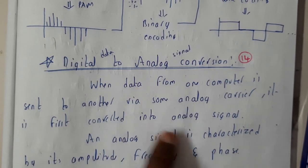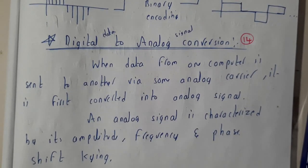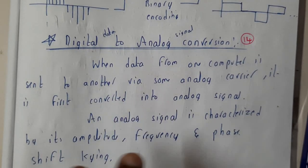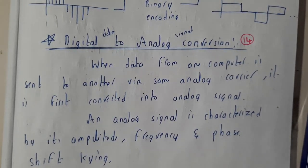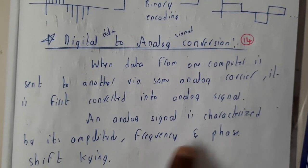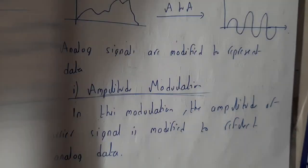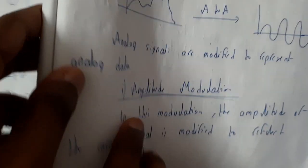Digital data is indirectly converted into analog signal. How many ways can we represent analog signals? With respect to amplitude, with respect to frequency, and with respect to phase. Based on these three properties, we will represent the conversions.